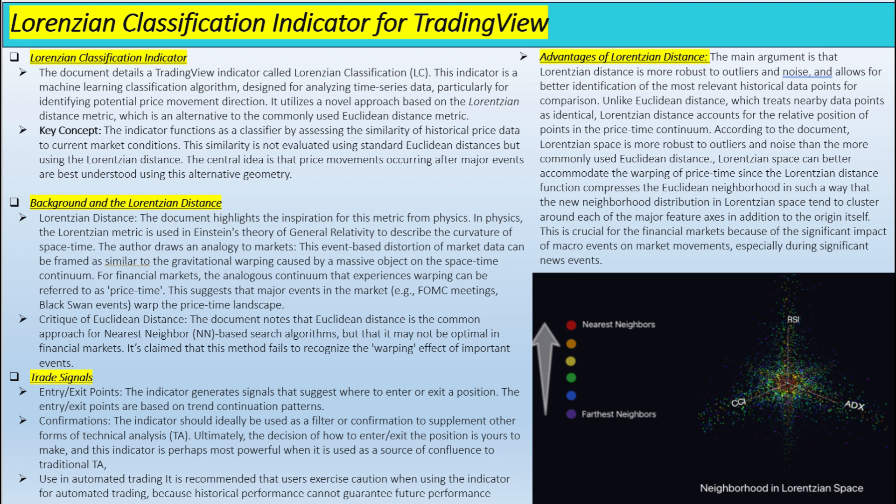The ANN method uses nearest neighbors — you can set it to find, say, the five most similar historical patterns. It's like saying: show me five times in history when the market behaved like it's behaving now. So it's like having a crystal ball, but instead of the future, it shows you echoes of the past that might hold clues about what's coming next. This isn't giving you a guaranteed prediction — it's about providing a new lens, a new way to see the market that takes into account the very fabric of space and time.